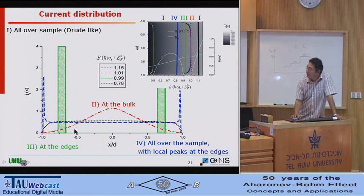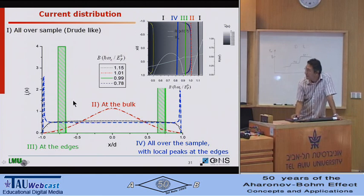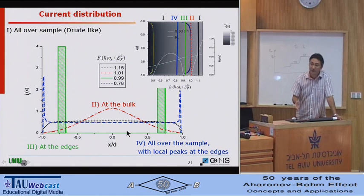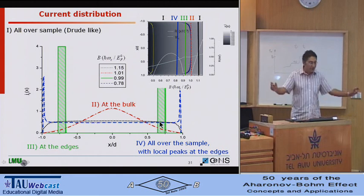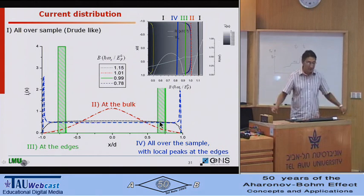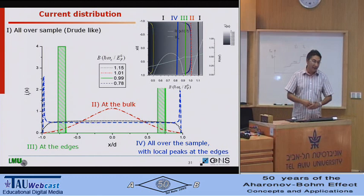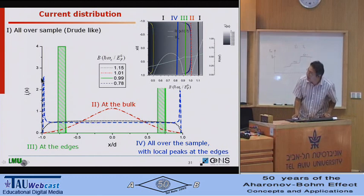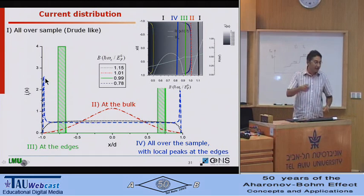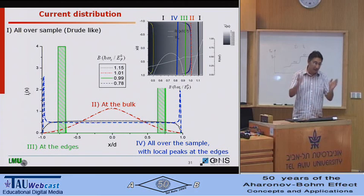So this is how the current distribution looks like. Out of plateau, the current is like metal, like the Drude model. Then when you enter the plateau, all the current is flowing at the bulk. So this is like localization picture. Then if you come to the lower part of the plateau, the current is confined to the edges, to the incompressible strips. Then if you go out of the plateau, you have still some spikes at the edges. And if you are really putting some non-equilibrium current there, you can carry current and do all these beautiful experiments.